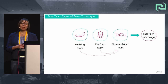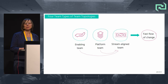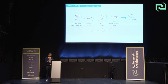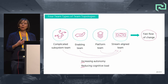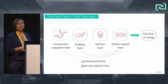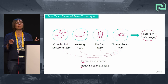Enabling teams, as we heard from the previous talks, help stream-aligned teams identify and acquire missing capabilities, working as internal coaches in your organization. Stream-aligned teams can also get support from Complicated Subsystem teams — an optional team type — that support stream-aligned teams on particularly complicated subsystems requiring very specialized knowledge. All of these team types aim to increase the autonomy and reduce the team cognitive load of the stream-aligned teams to enable a fast flow of change.